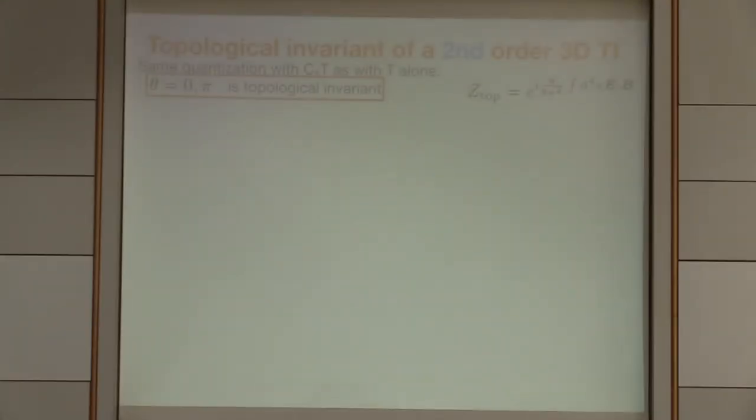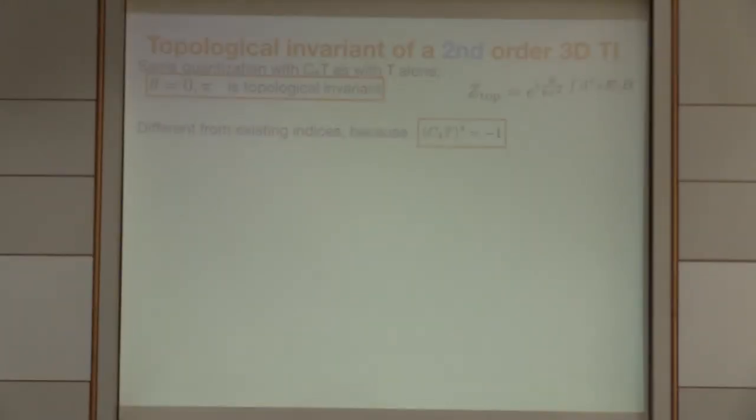So for these higher order topological insulators, it's actually super simple. The invariant is the same as for the TI. It's the same theta angle. It's quantized also to 0 or pi. The only thing that's changing is the reason why it's quantized. It's now not quantized because of time reversal symmetry, but it's because of C4 times time reversal symmetry. But you can show that this symmetry enforces the exact same quantization, so the invariant is the exactly same one. It just doesn't protect gapless surface states in this case. That's the difference.